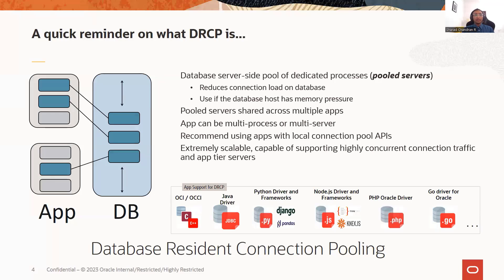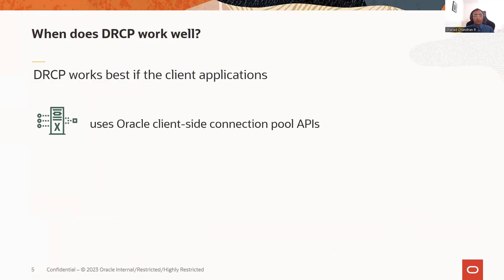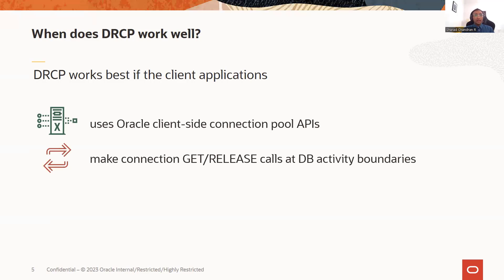The good thing is DRCP is supported in almost all of our drivers, such as Oracle Call Interface, Java drivers, Python, Node.js, etc. DRCP works best if client applications use Oracle client-side connection pool APIs, which have persistent connections to the DRCP brokers, and if the applications make connection get/release calls at database activity boundaries. This is provided implicitly or automatically when you have the client-side connection pooling APIs.